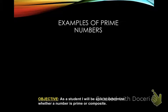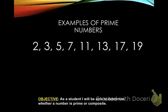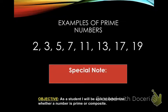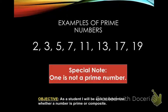Here are some examples of prime numbers that you need in your graphic organizer: two, three, five, seven, eleven, thirteen, seventeen, and nineteen. All eight of these are ones you need to have memorized — you're going to use these a lot in class.